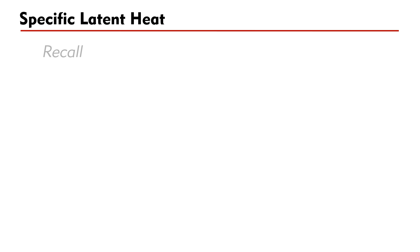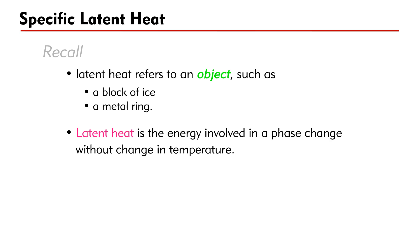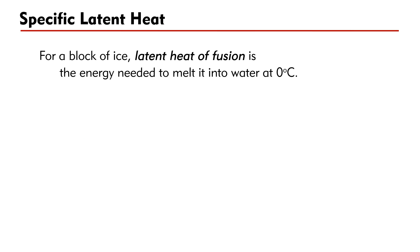Let's recall that latent heat refers to an object such as a block of ice or a metal. Latent heat is the energy involved in a phase change without a change in temperature. For a block of ice, the energy needed to melt the ice into water at 0 degrees Celsius is the latent heat of fusion of the ice block.